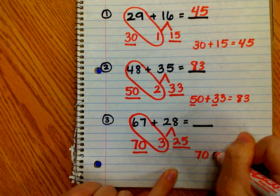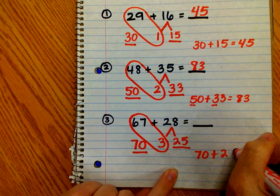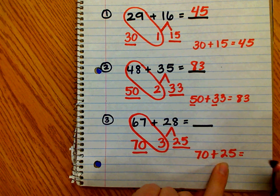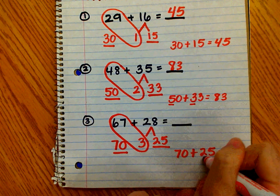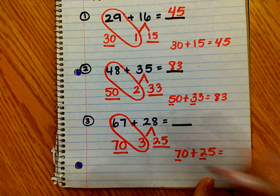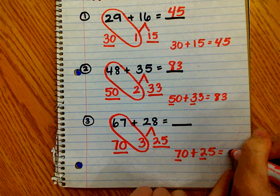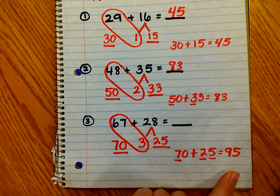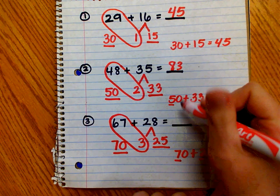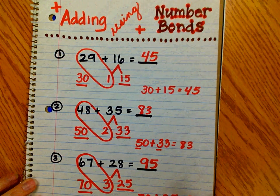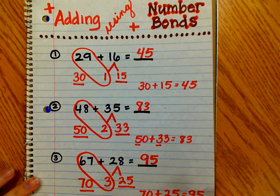Now I add my two numbers, 70 plus 25. Again, students can use their knowledge of place value to see that 25 has 2 tens. And if I add 7 tens, 2 tens plus 7 tens is 9 tens, and I have 5 ones. So 67 plus 28 equals 95. And that's how our students can use number bonds to help them add. Thank you.